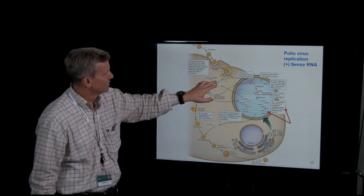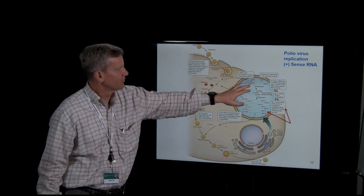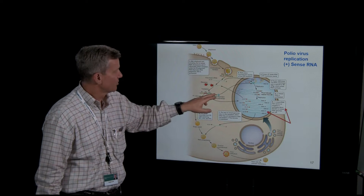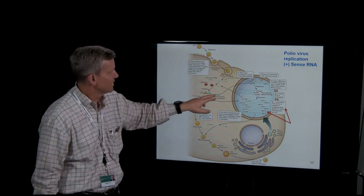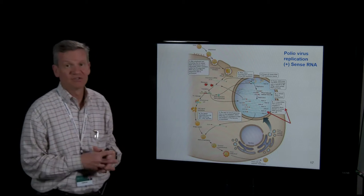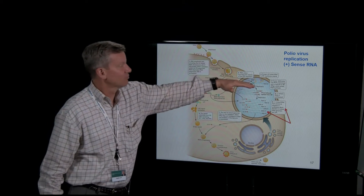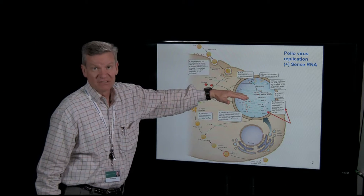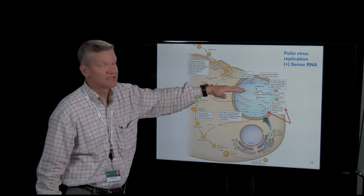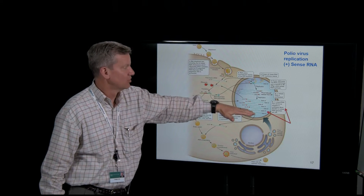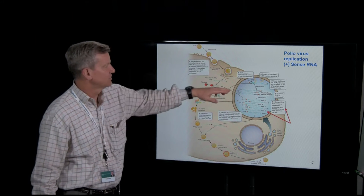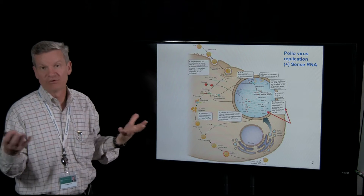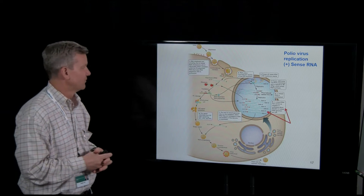In a vesicle, this positive sense RNA goes over and an RNA-dependent RNA polymerase — from the protein that was made — comes over and starts making negative sense RNA. You start with your genome as positive, then the RNA polymerase makes a negative sense RNA, and the negative sense then forms a template for more genome. This is all your genome down here; this is the starting genome of the virus.